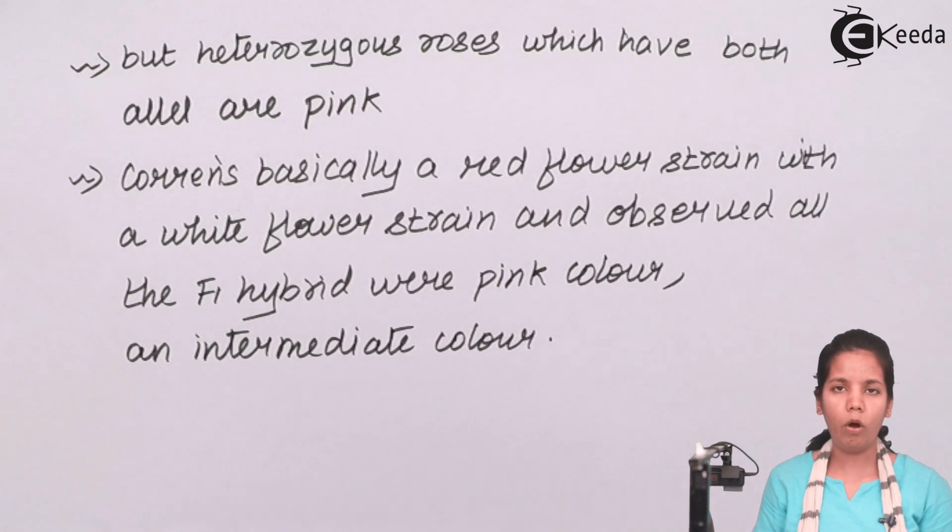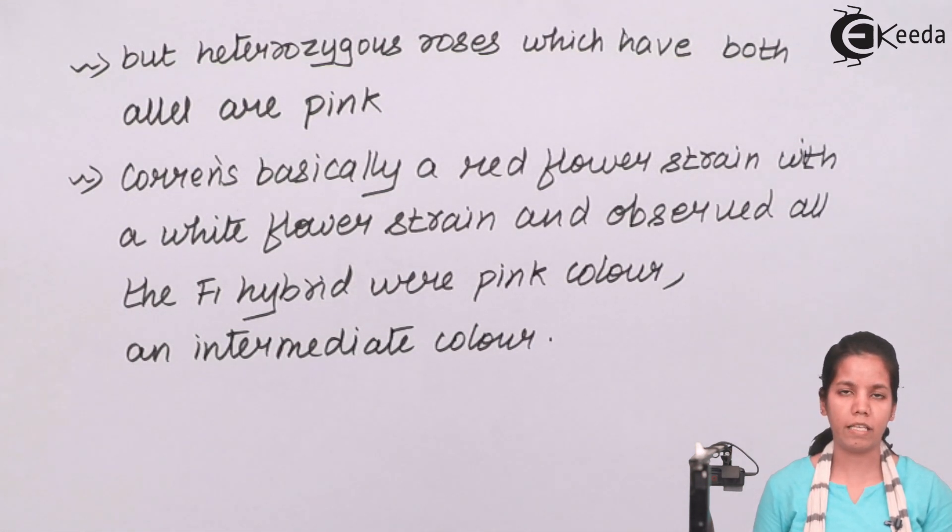Now the law of incomplete dominance not only governs Mendel's pea plant, it also governs different human beings in terms of your eye color, in terms of your hair color. Your parents would have certain colors of eyes, for example black, and the other parent would have a certain color of eye. You could have a combination of both or just little different. Hair color or your skin color sometimes show incomplete dominance.